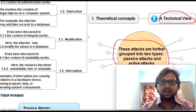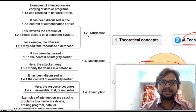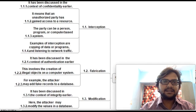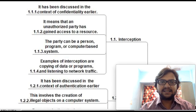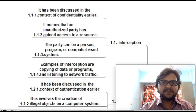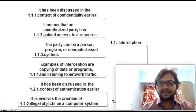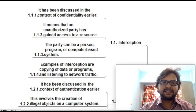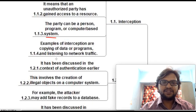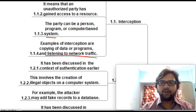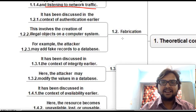The first theoretical concept is interception, discussed in the context of confidentiality. Interception means an unauthorized party has gained access to resources — that party can be a person, program, or computer-based system. Examples include copying of data or programs and listening to network traffic.